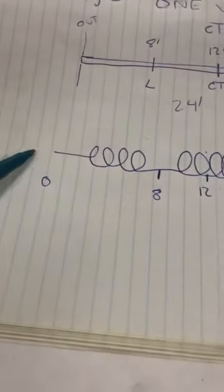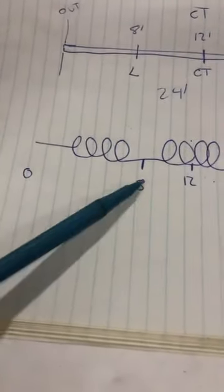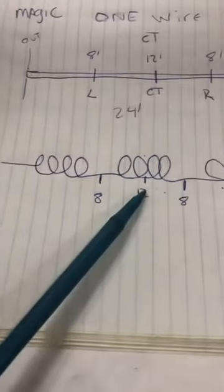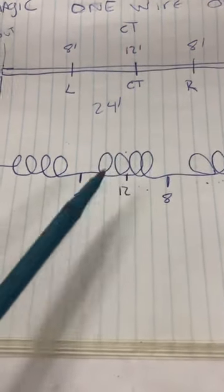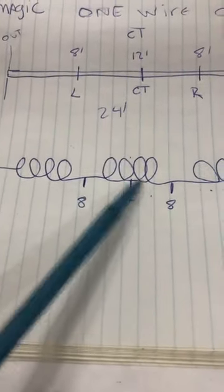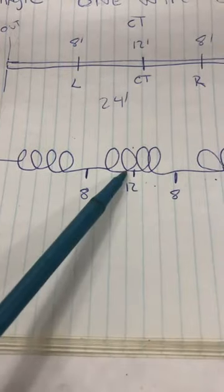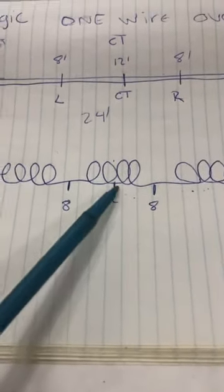the end of the coil. So basically, zero feet to eight feet, we've got one coil. Zero to 12 feet is the center point, the center tap of the entire coil. So that's halfway, the second turning, and then from